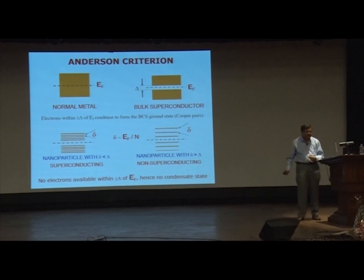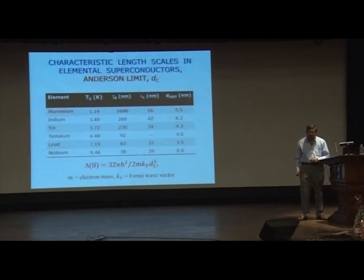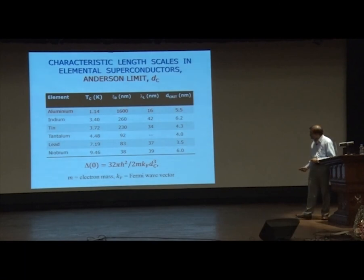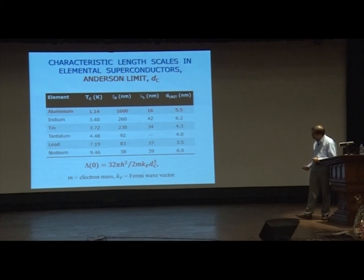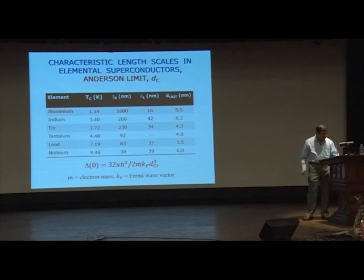The Anderson criterion gives a simple back-of-the-envelope calculation. If DC is the critical size at which superconductivity is likely to get destabilized, you can calculate it from the band gap. This critical size for all these metals doesn't vary too much — it is between about 4 nanometers and maybe 10 nanometers. Let us see if this works.